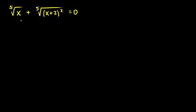I'll use a power of 5 to get rid of the radical. So this will be the fifth root of x equals the negative fifth root of x plus 2 squared.